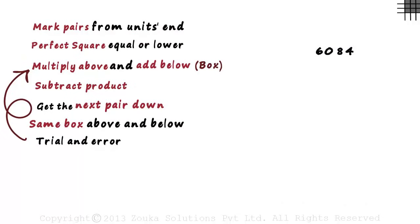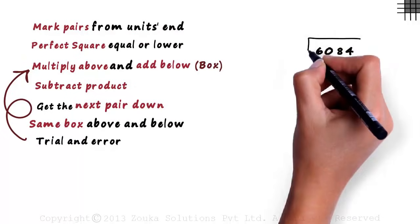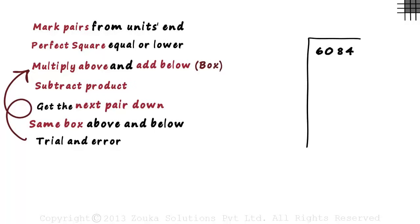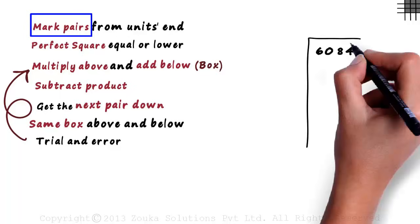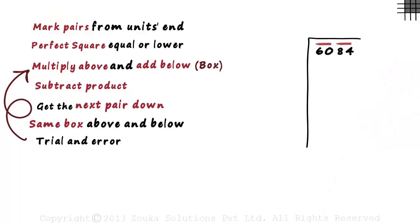Before we start off with the steps, remember to draw lines like these next to the number. After this, go to the first step. We mark pairs from the units end. So we draw bars over 84 and 60. So the two pairs we have are 60 and 84.